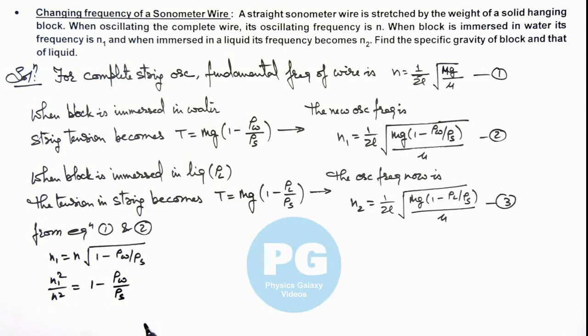This results in ρ_solid/ρ_water = n²/(n² - n₁²), which is the first answer of this problem: the specific gravity of the block.